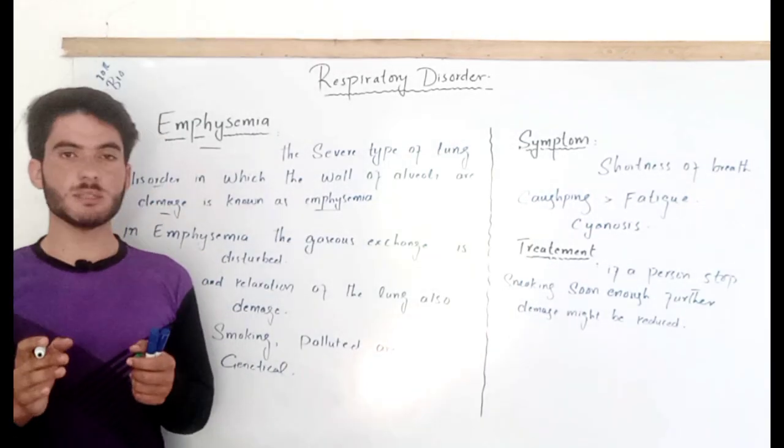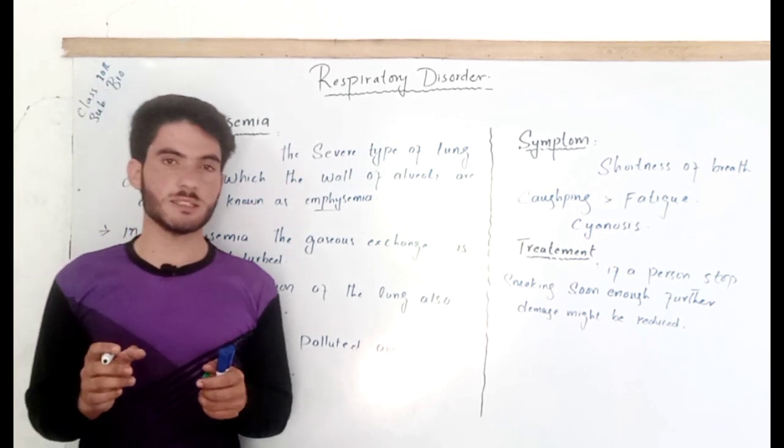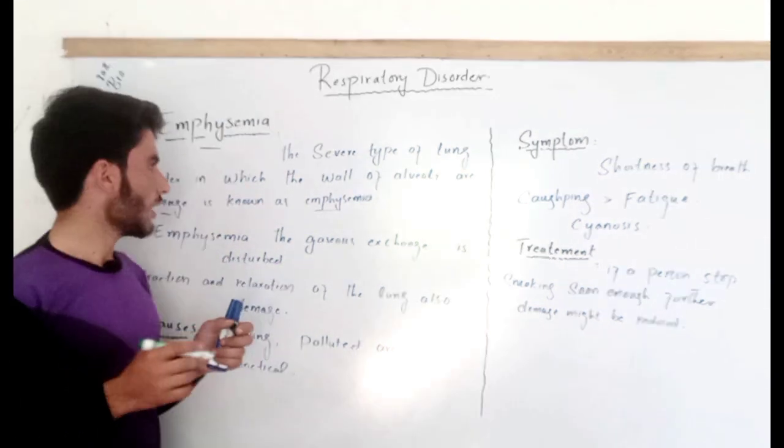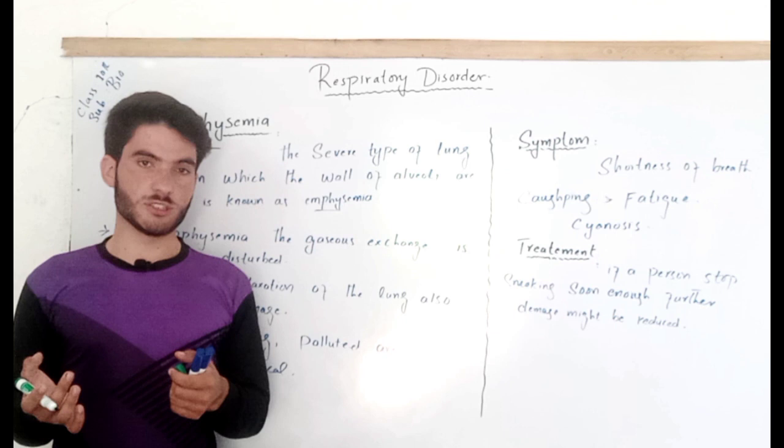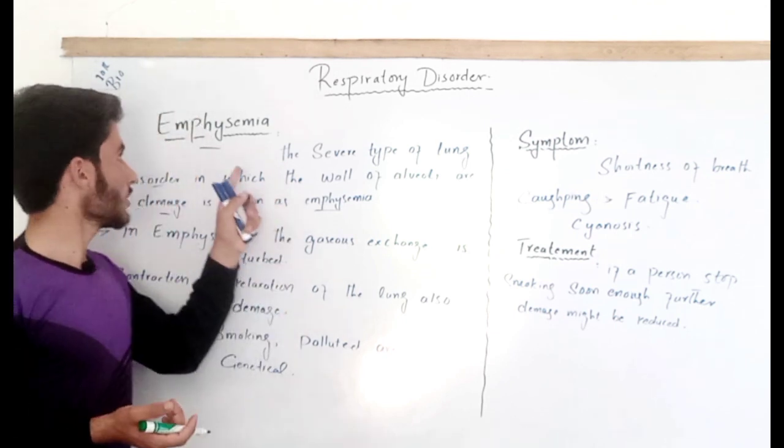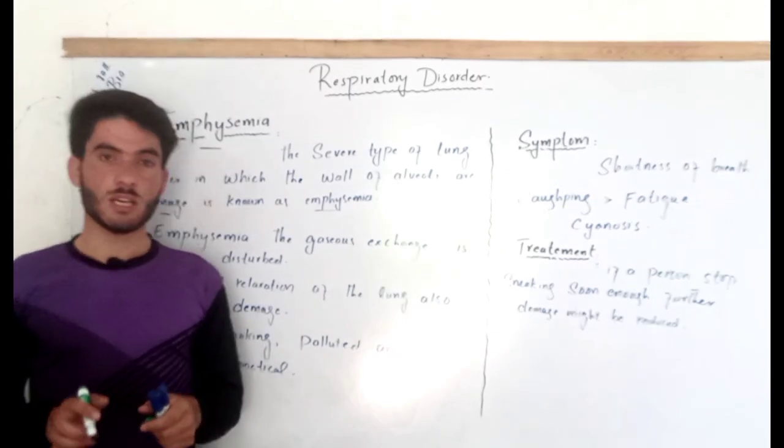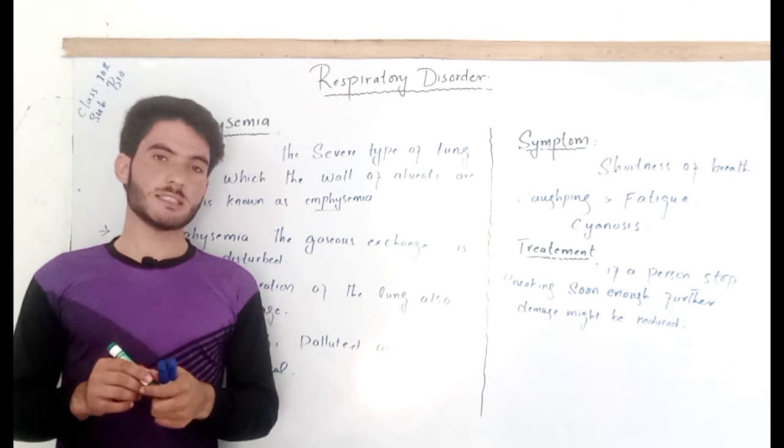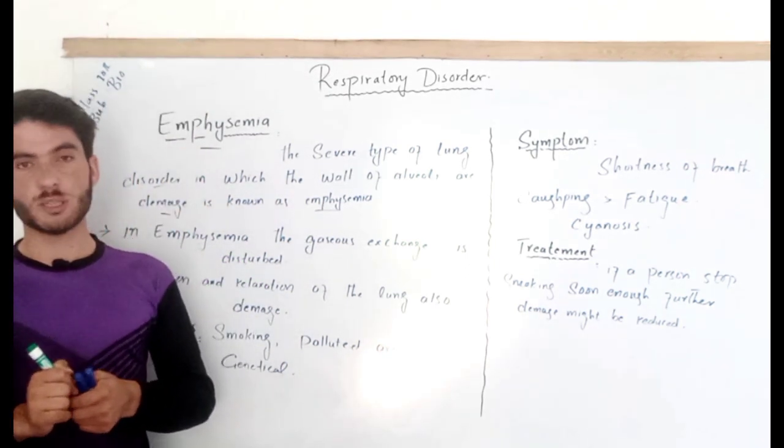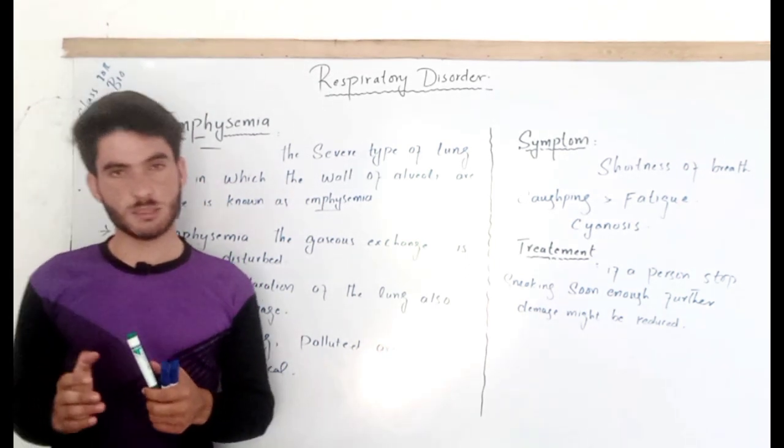Now in emphysema, there are severe types of lung disorders. So in emphysema, the alveoli are damaged. The disease causes a reduction of oxygen in the blood.